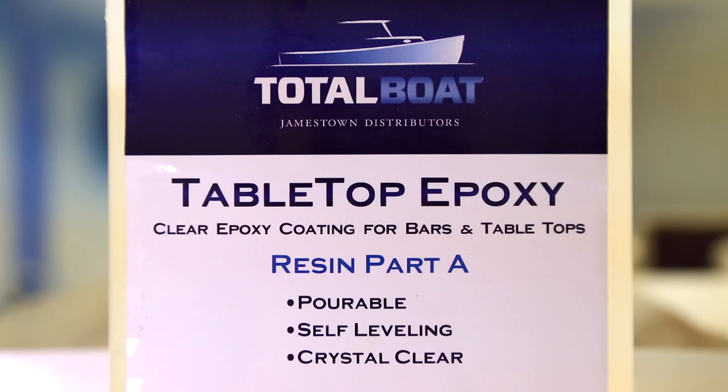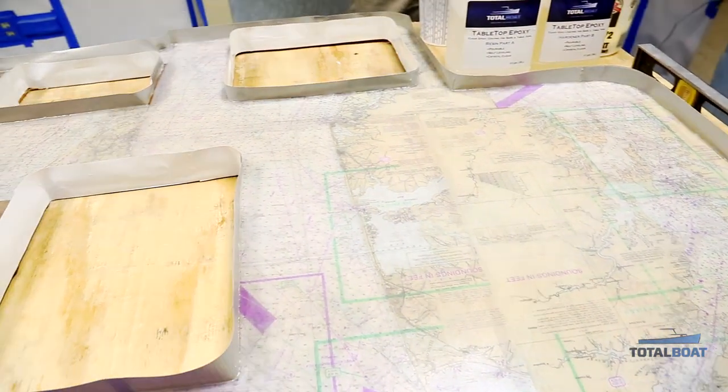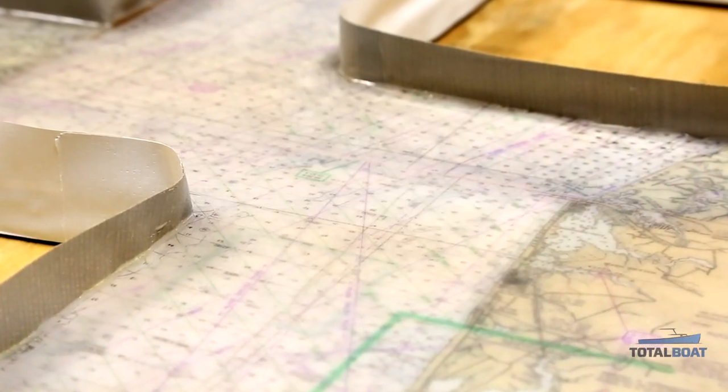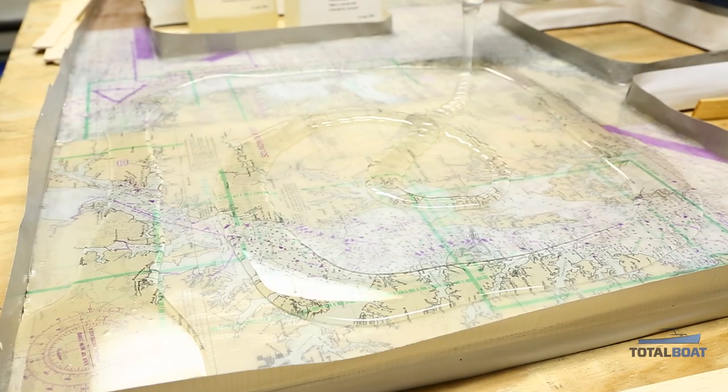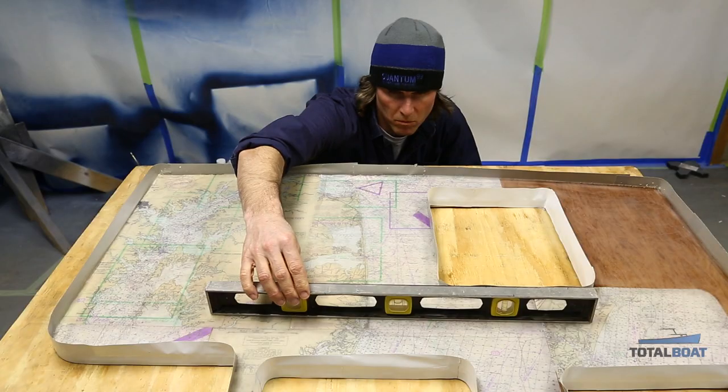Today we're using TotalBoat tabletop epoxy to seal this boat countertop and seal in this chart of Chesapeake Bay. We used duct tape to seal the edges and give it a dam. We did one layer of the tabletop already and sanded it with 220 grit.